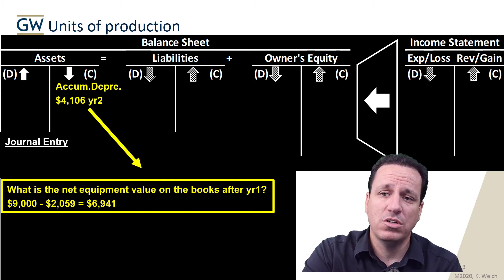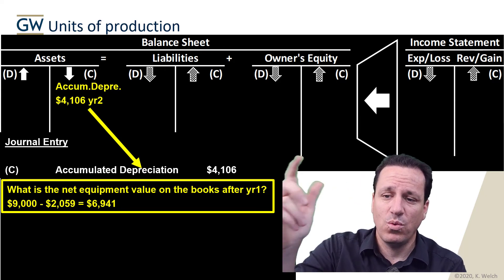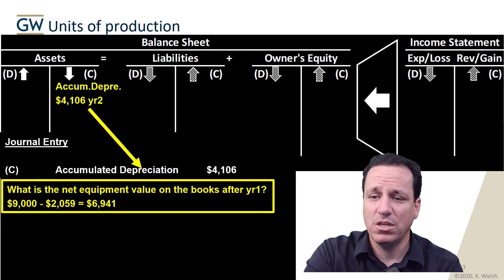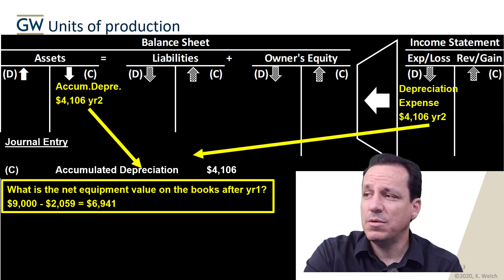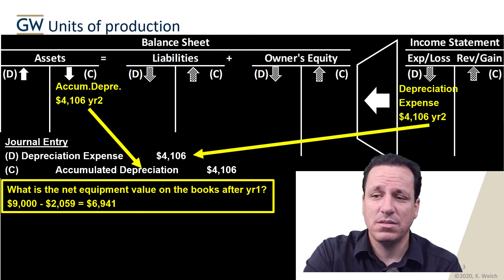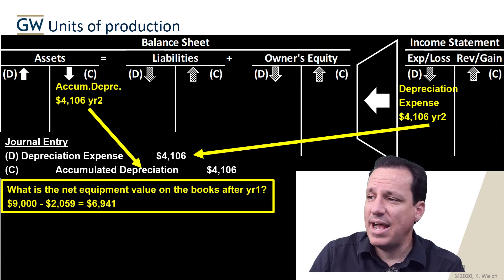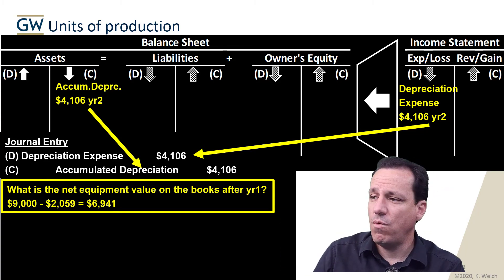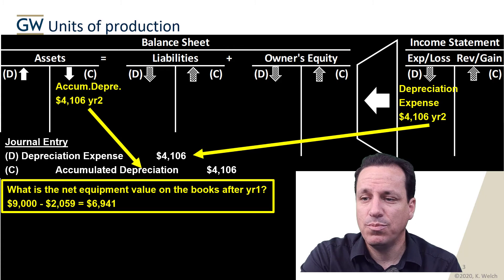In year two, $4,106 is what we report. We add $4,106 to the accumulated depreciation with another credit, and we debit the income statement for depreciation expense of $4,106. That tells us we had use of that asset worth $4,106 in year two.